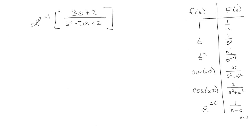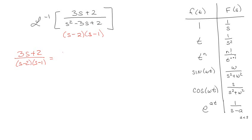So let's start out with this one. It's pretty straightforward from the beginning to say this is going to factor out to s minus 2, maybe s minus 1. Beautiful. So that means that somewhere along the way we're going to have partial fraction decomposition — s minus 2, s minus 1 — and that this is going to be equal to some kind of A over s minus 2 and B over s minus 1.